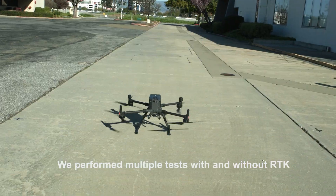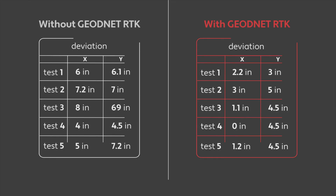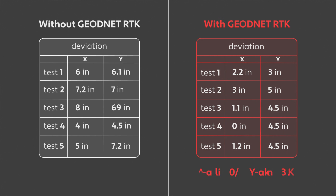The disparity in deviation between using RTK and not using RTK is notably substantial. Across all five tests, the performance consistently favors RTK usage. With RTK, the deviation range for the x-axis was between 0 and 3 inches, and for the y-axis it was between 3 and 5 inches. In contrast, without RTK, the variability was significantly wider, with the x-axis ranging up to 48 inches and the y-axis ranging from 4.5 inches to as high as 69 inches.